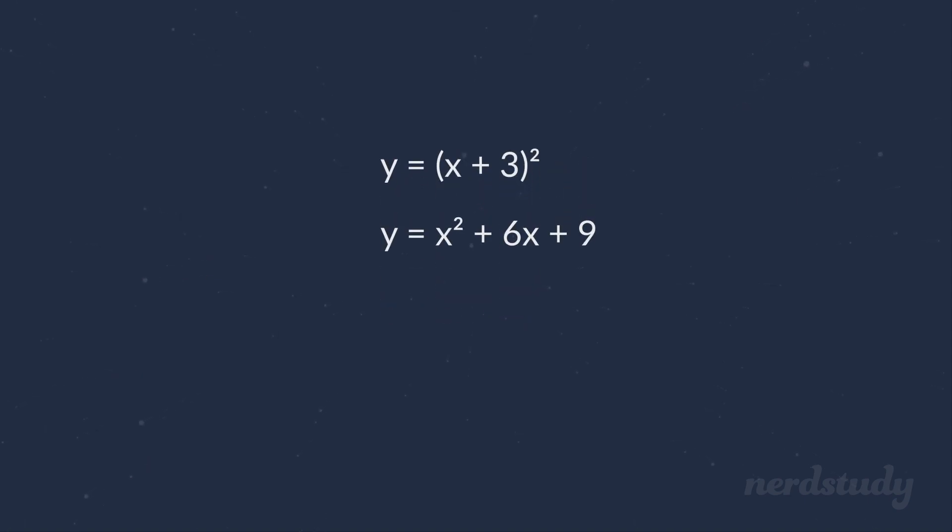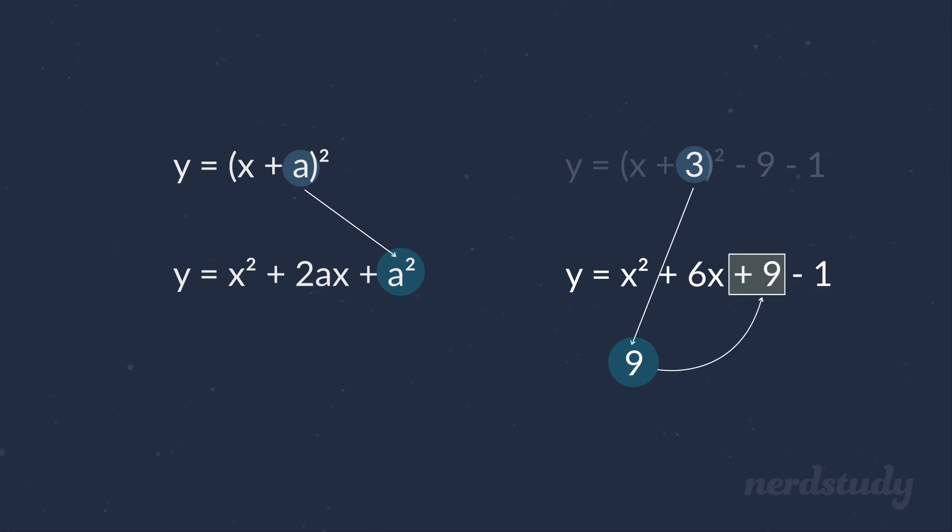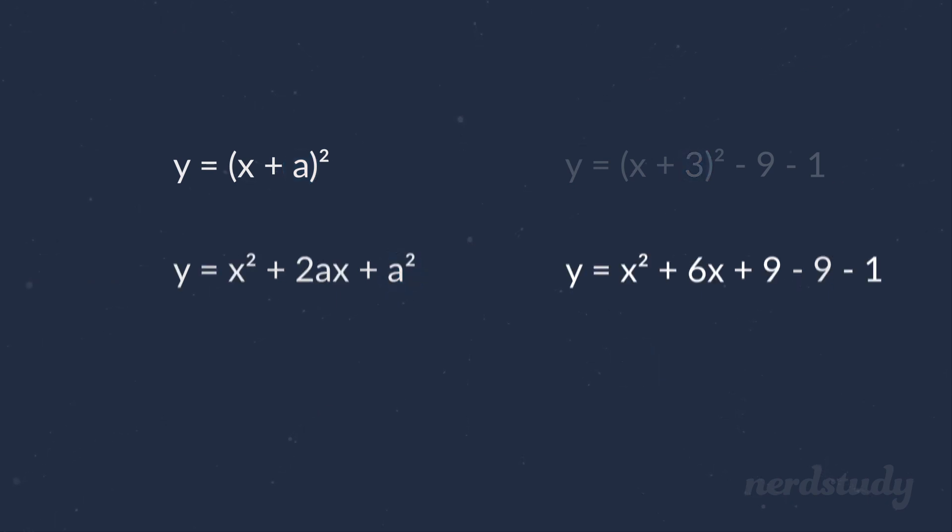If you compare this to the perfect square trinomial formula, you'll see that this a is being multiplied by 2 here and squared here. Therefore, if you see an equation that isn't a perfect square trinomial, such as our previous example, then you can create one by taking this number that is being multiplied by x, divide it by 2 so that in essence we are finding this number here, and then square it. The resulting number is the number that we use to add and subtract from the equation to manipulate a segment of it for us to perform completing the squares.